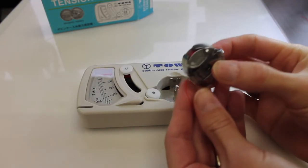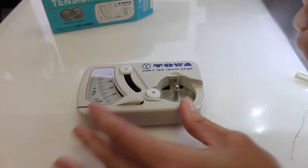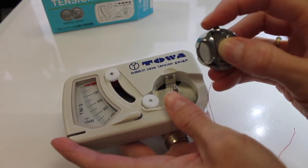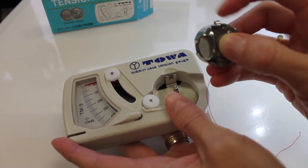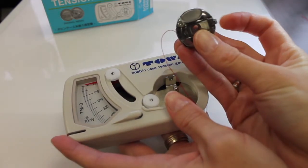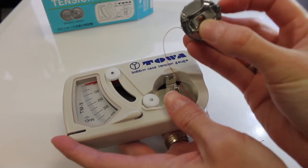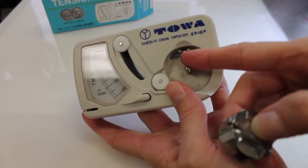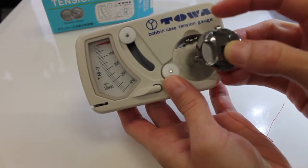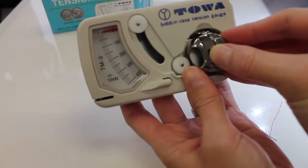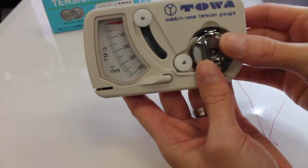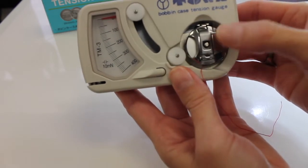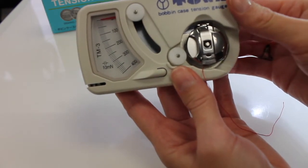Now that I have my bobbin in my bobbin case, I'm ready to use my Towa gauge. So I will grab that, and the notch on your bobbin case that when you put it into the machine usually points to three o'clock—we're going to point that straight up to twelve o'clock so it can catch right here in our Towa gauge. So with the notch pointing up, I'm going to drop it in, and I do want to give it a good solid click, a good solid push so I hear it click into place—that's very important.